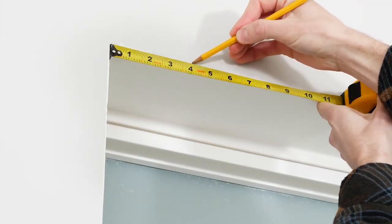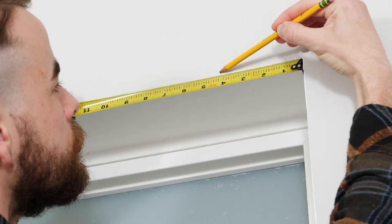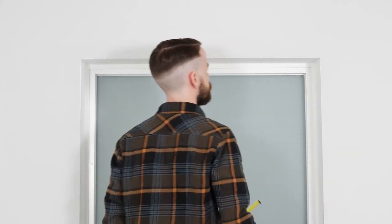Depending on the width of your shade, you want to place your brackets 2 to 4 inches from each end, so just make a little mark there at the top of the window.